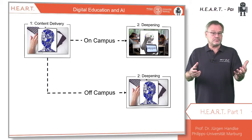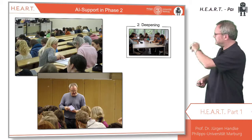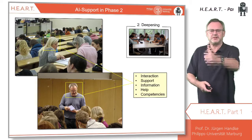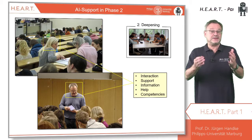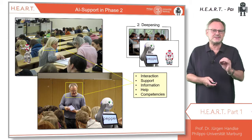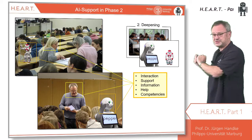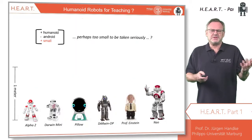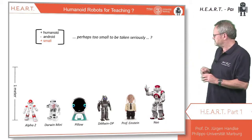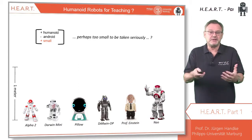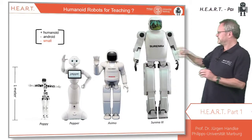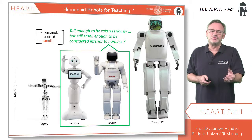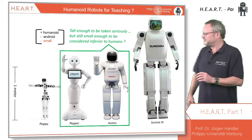But what will such robots do? In the in-class phase of an inverted classroom scenario, human coaches no longer teach in the classical sense — but they help, support, assist, and so on. And here, robots may come in to do exactly the same: assist and advise. Perhaps size is an important issue. Maybe they shouldn't be as small as some fellows whose height is way below one meter, but not too tall like some others. In other words, tall enough to be taken seriously, but still small enough to be considered inferior to humans.